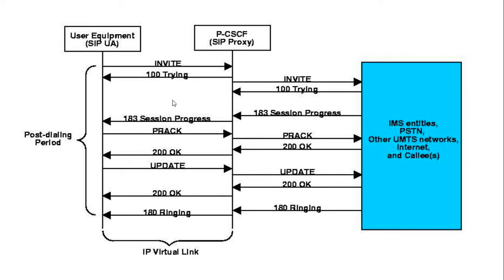In SIP, here is the early media flow: you send an INVITE, 100 Trying is sent, then 183 Session Progress or 180 Ringing is sent. The 183 Session Progress basically allows the other party to send media without answering the call. Let's check a trace to see how this is possible.